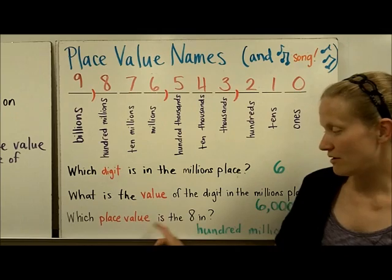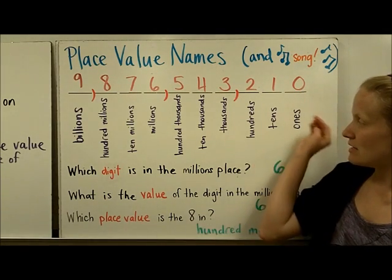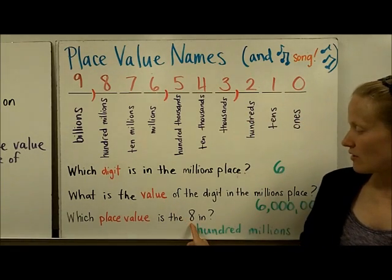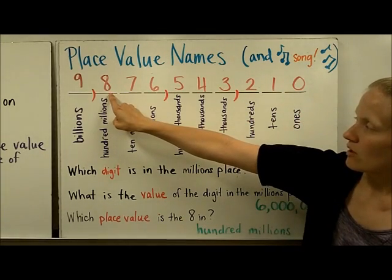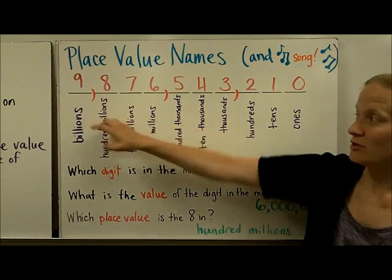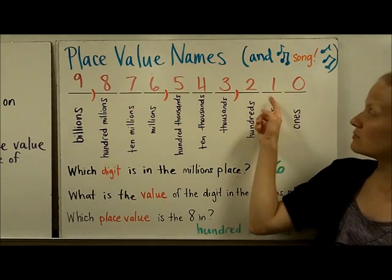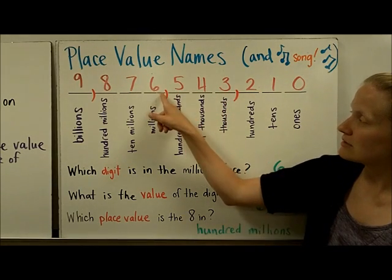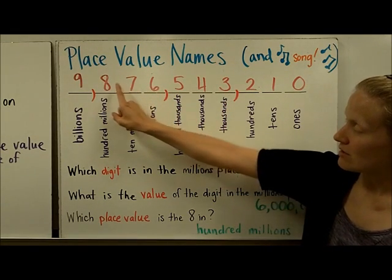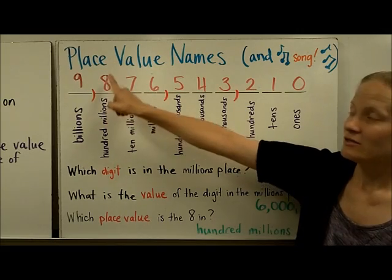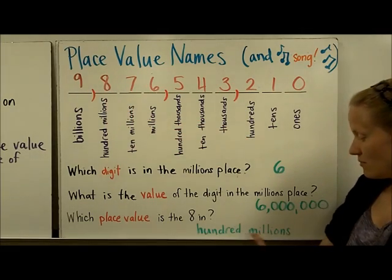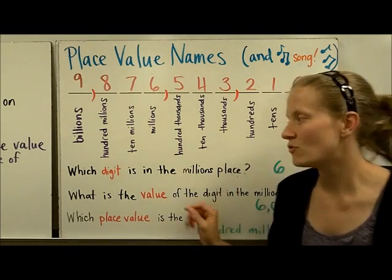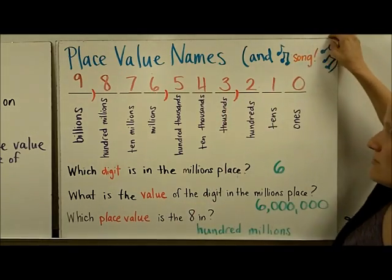Which place value is the 8 in? When they're asking for a place value, that's the name of one of the place values. So we're going to find the 8 and then figure out which place value it's in. And if you didn't have them written, you could sing the song: ones place, tens place, hundreds place, comma, thousands, ten thousands, hundred thousands, comma, millions, ten millions, hundred millions. So this 8 is in the hundred millions place. So be careful that you watch out for exactly what the question is asking for.